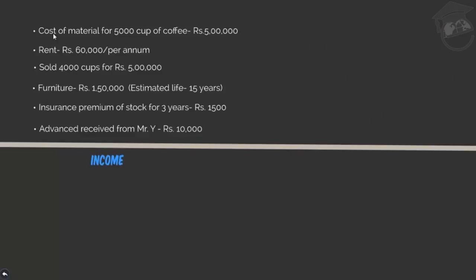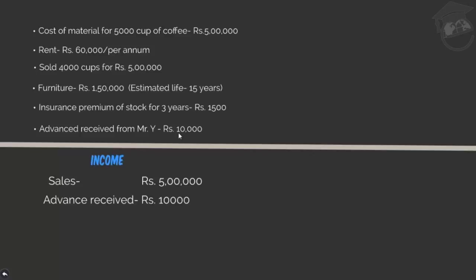Cost of material for 5,000 cups of coffee — no, this cannot be my income; this is an expense. Rent Rs. 60,000 — also an expense. Sold 4,000 cups of coffee for Rs. 5 lakh — this shows revenue, so I note it under income. Furniture Rs. 1,50,000 — not income, I paid for it. Insurance premium — also an expense. Advance received from Mr. Y — this is also a source of income, so I note this down. My income sums up to Rs. 5 lakh 10,000.